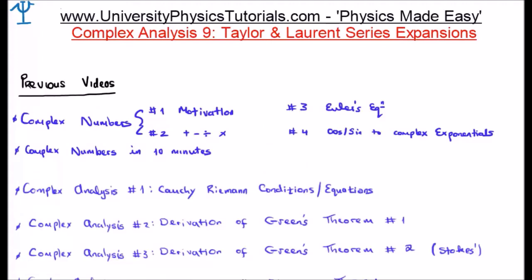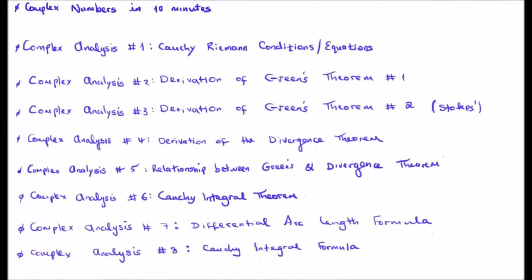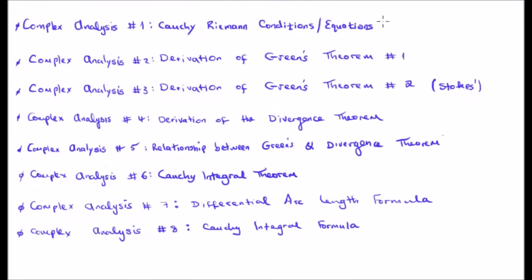I'd like to recap on the videos previous to this which are relevant. We are discussing complex analysis and therefore my videos on complex numbers are relevant. In this section I derived the Cauchy-Riemann equations, derived Green's theorem, derived the divergence theorem, and showed the relationship between them. In video 6 I discussed the Cauchy-Integral theorem and the differential arc length formula. In video 8 I derived the Cauchy-Integral formula, which is the most important part of the series.